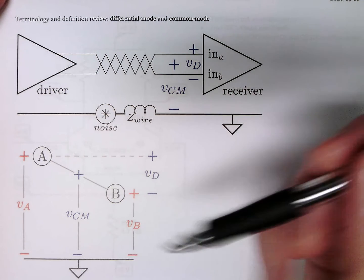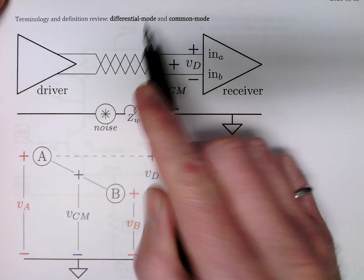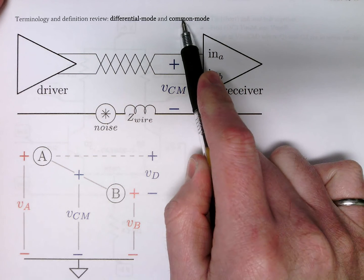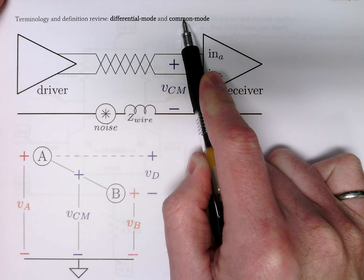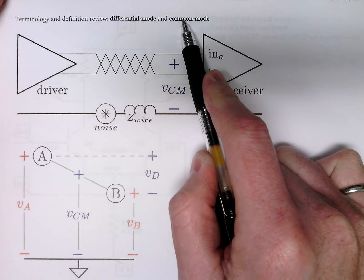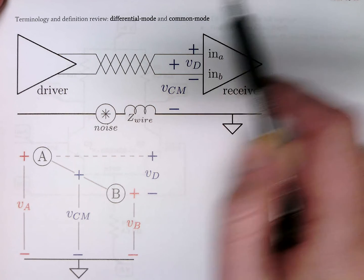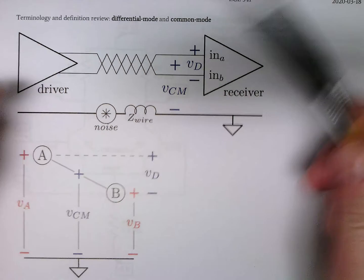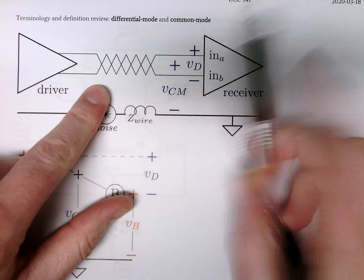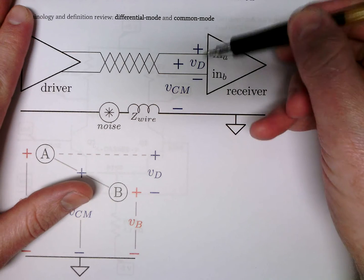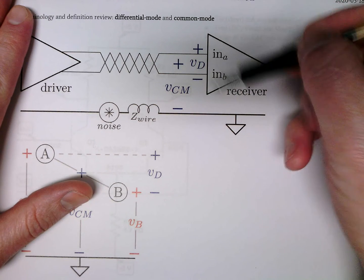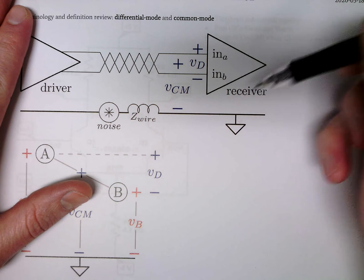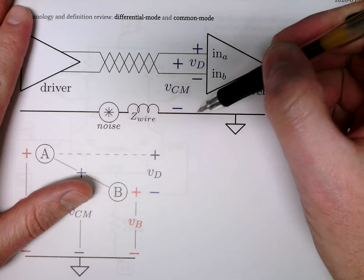We're going to review differential and common mode terminology. This is going to be very important when we're dealing with amplifiers, especially op amps, which will be our focus for the near future. In differential mode, we have two wires coming in. Notice how there's also a third reference — we call this the ground node, or I like to call it the reference.